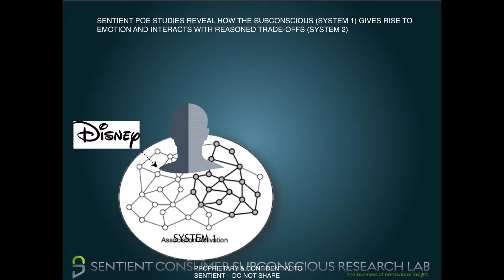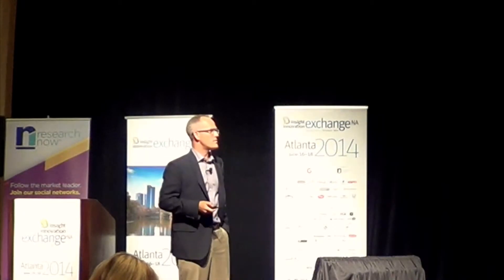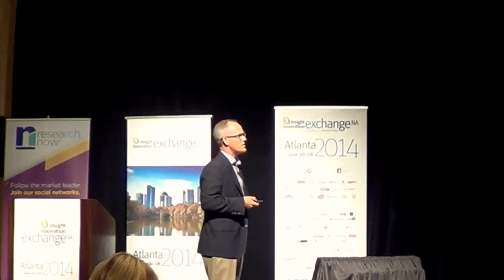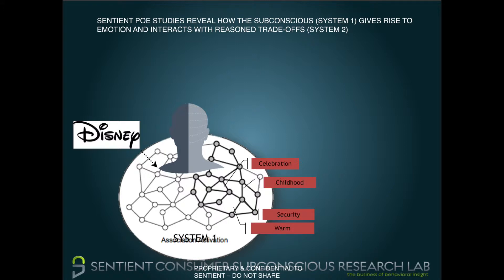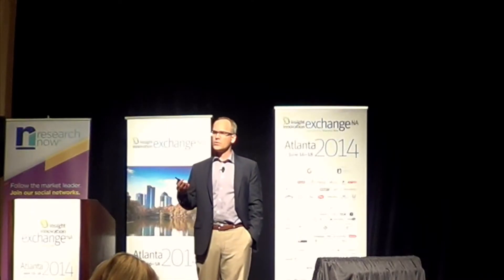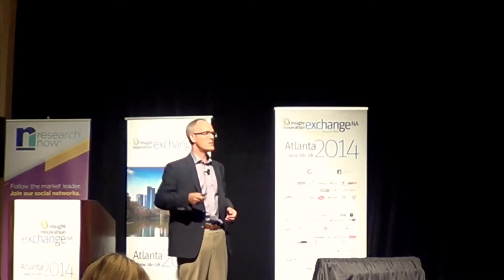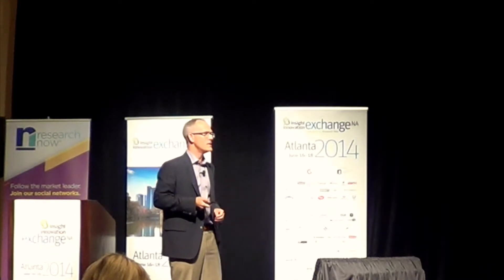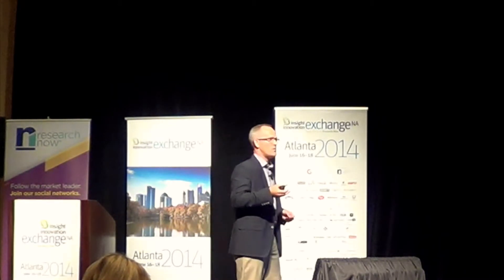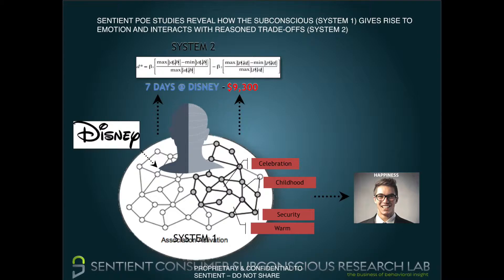When we think of System 1 and System 2 thinking — think of that as System 1: what's happening automatically and associatively in your mind. It's only one piece of the picture. We see Disney, we feel celebration, warmth, childhood security — that may give rise to an emotion like happiness. But it's not just System 1 that determines whether you take a vacation at Disney. You actually engage your System 2, your rational mind, which is more cognitive in nature and involves formulas.